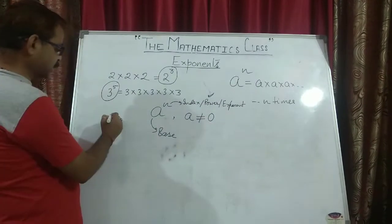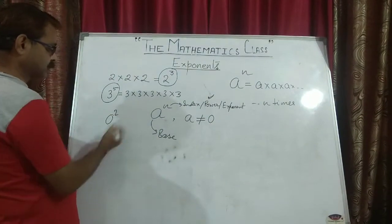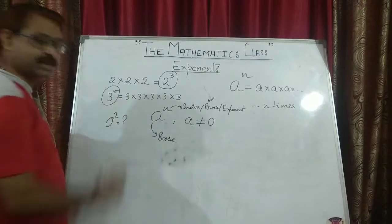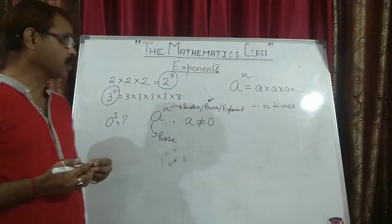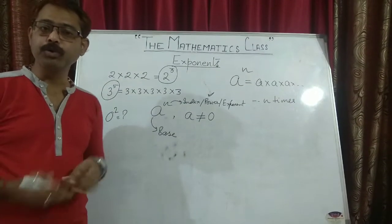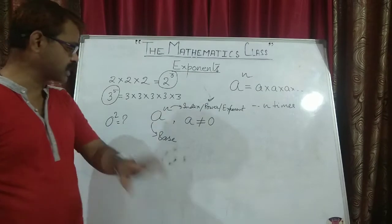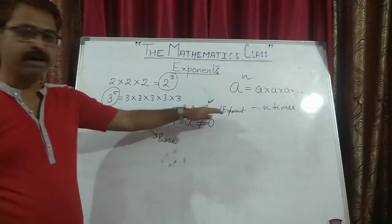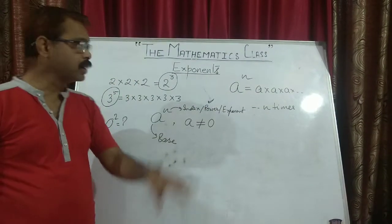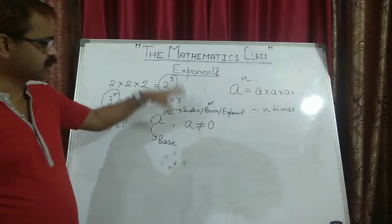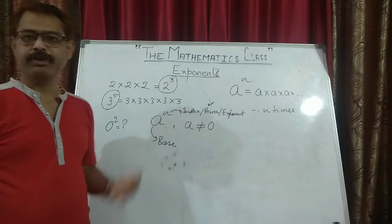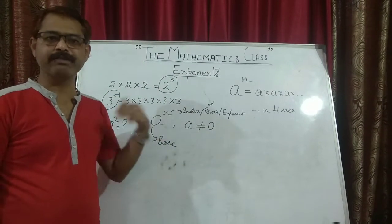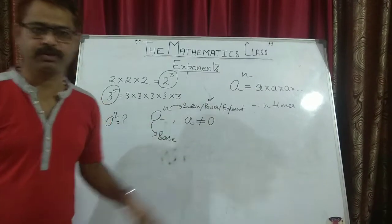You cannot say 0 to the power 2 — it doesn't make any sense. Now there are a few rules, and I hope you must have understood the base and the power. We will be discussing those rules and then we will be starting with the questions.